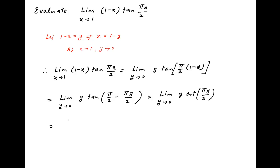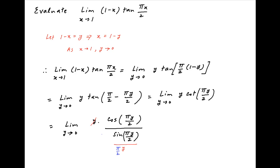This can be rearranged as limit y tending to 0, y times cos of (pi y upon 2) divided by sin of (pi y upon 2). Now multiply and divide the denominator by pi upon 2. Notice that in the denominator, sin of (pi y upon 2) divided by (pi y upon 2) tends to 1 as y tends to 0, and in the numerator, cos of (pi y upon 2) tends to 1 as y tends to 0.